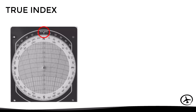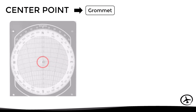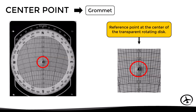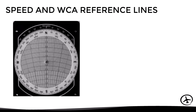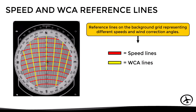One of the most important markings is the true index, which is a reference mark on the fixed scale, as we can see in this image. Another important mark is the center point, also known as the grommet, which is a reference point at the center of the transparent rotating disk. Finally, there are the speed and wind correction lines, which are located on the background sliding grid, representing different speeds and wind correction angles. The transverse red lines represent the speed, and the longitudinal yellow lines represent different wind correction angles.